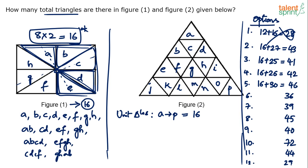Will combining three units give a triangle? No. Combinations of three units also give only trapezoids — for example, J, K, L is a trapezium; M, N, O is a trapezium. So three units also will not give you a triangle. But four units — yes, combining four units gives triangles. For example, A, B, C, D is a triangle.